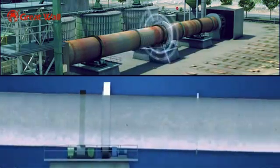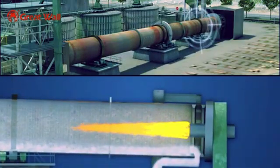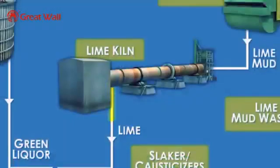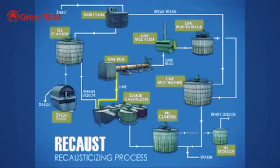By the time the lime mud completes its journey to the lower end of the kiln, it is about 98% calcined. The lime is now ready to be reused in the recost process.